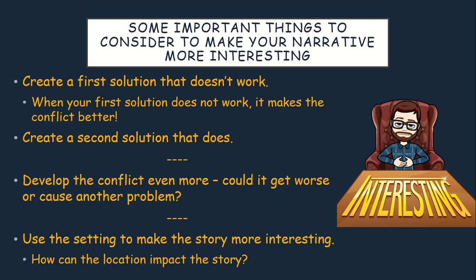Some important things to consider to make your narrative more interesting: create a first solution that doesn't work. When your first solution doesn't work, it typically makes the conflict even better. Make your second solution work, because that way your story doesn't go on for too long. You can develop the conflict even more — consider how could this get worse or how can it cause a new problem? You can also use the setting to make the story more interesting. Consider if it's a hot or sunny day, snowy, or rainy — how might this impact the characters?